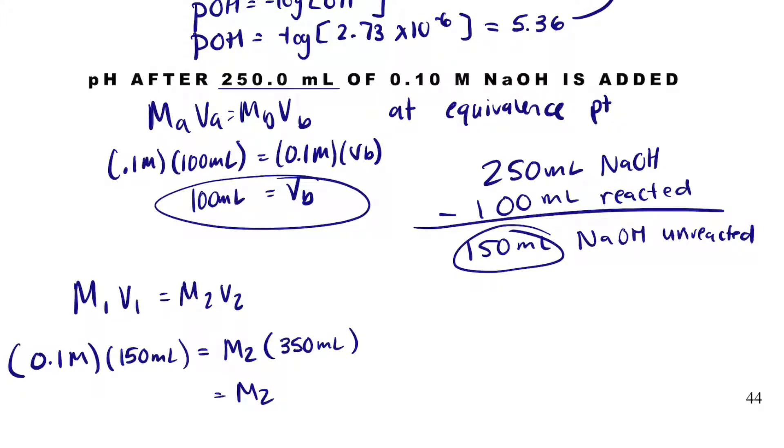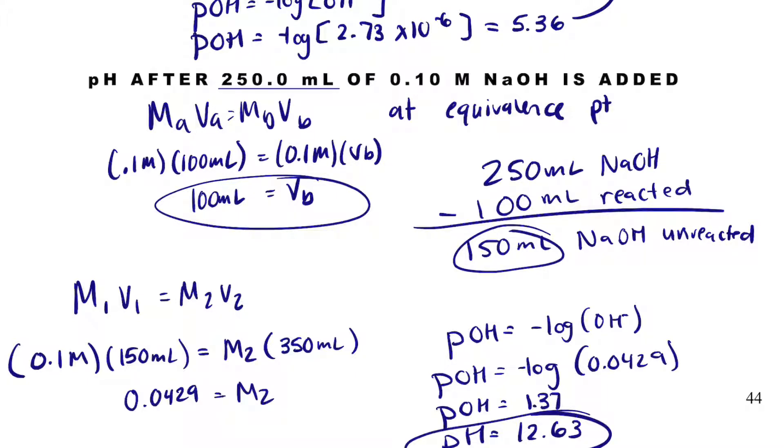So my new molarity is going to be 0.1 times 150 divided by 350, 0.0429 molar. And if I take the negative log of that, that will be the POH. And my POH is going to be 1.37. So my pH, if I subtract 1.37 from 14, I will get 12.63, which is exactly what we would expect, a very high pH with a whole bunch of base in excess.